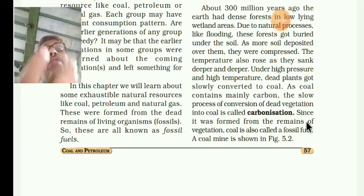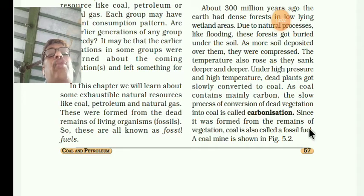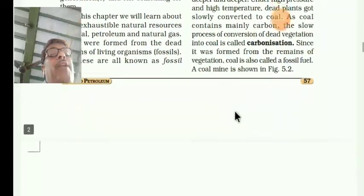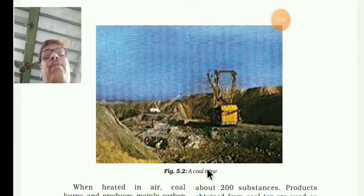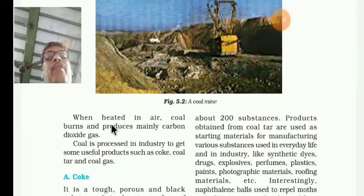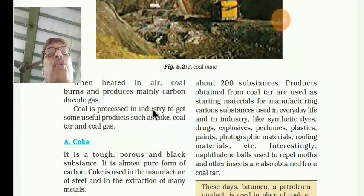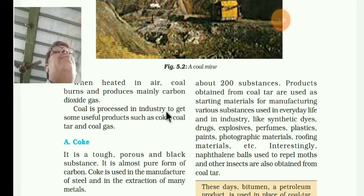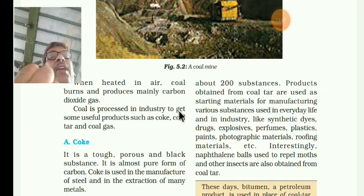Sometimes the question is asked — is coal formed from animals or plants? Remember: dead vegetation, remains of the plants. These are coal mines — like the Dhanbad coal mine in Bihar. After digging the earth, you get coal. When heated in air, coal burns and produces mainly carbon dioxide gas. Coal is processed in industry to get useful products such as coke, coal tar, and coal gas.